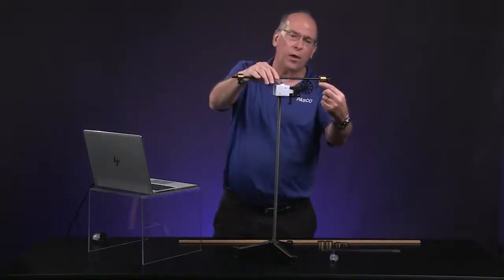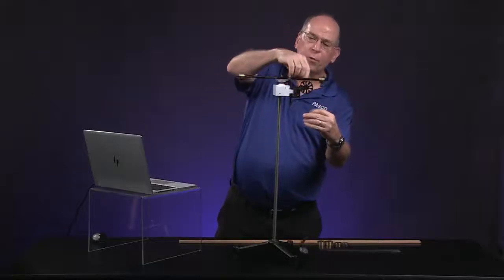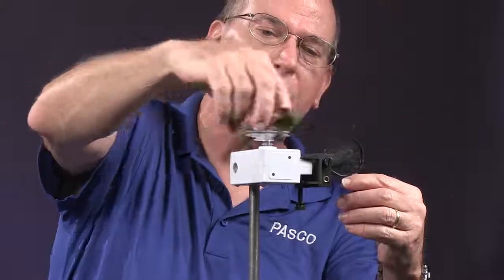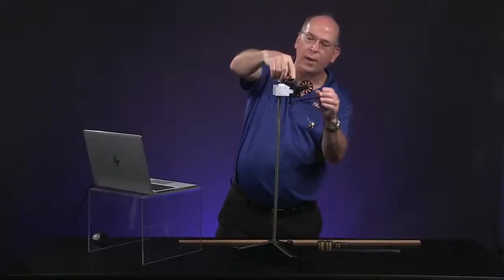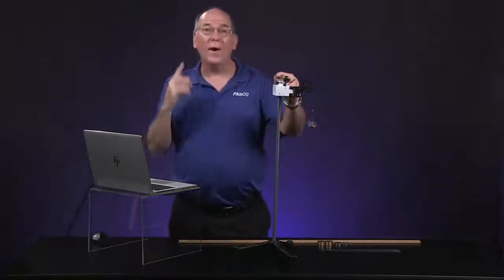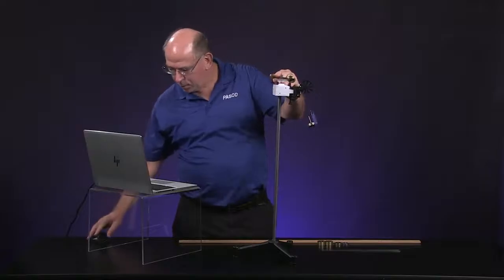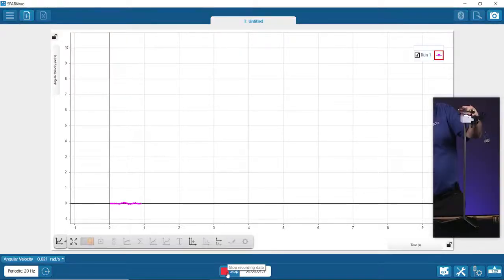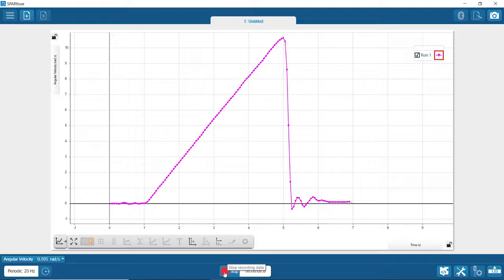A trial looks like this. First, we wrap the string around, making sure it's wrapped around the top pulley. There are other pulleys on this we could have used with smaller radiuses or radii. And then we're just going to release this from rest after we hit start. So we'll collect a little data first and then you'll see it move and you get a nice straight line.